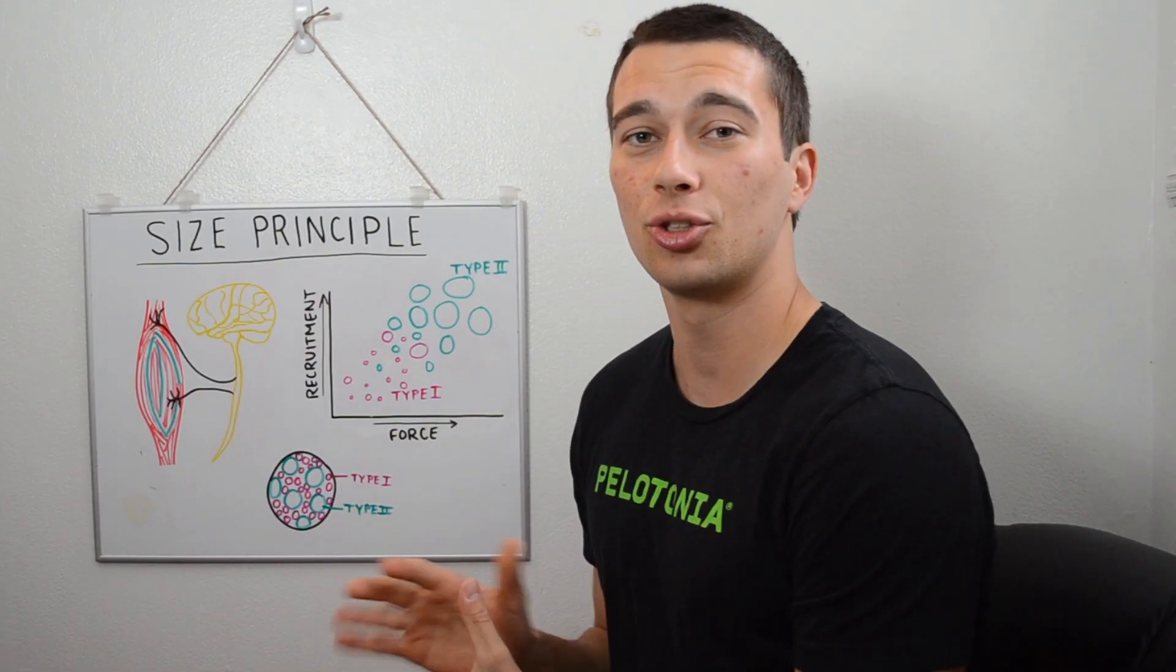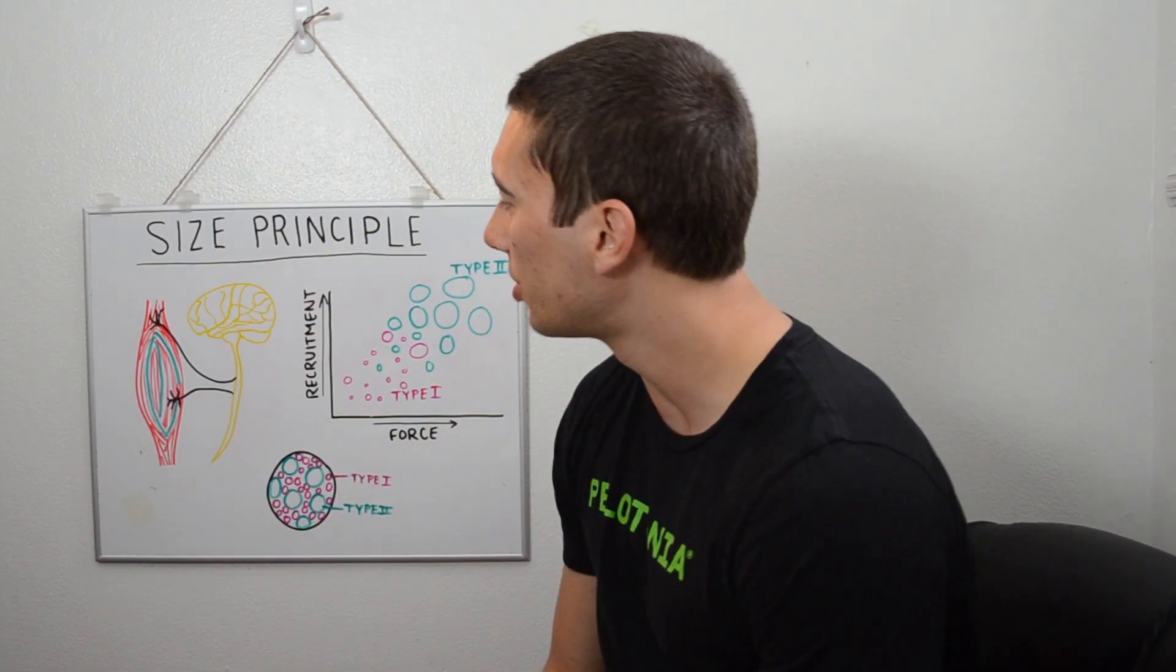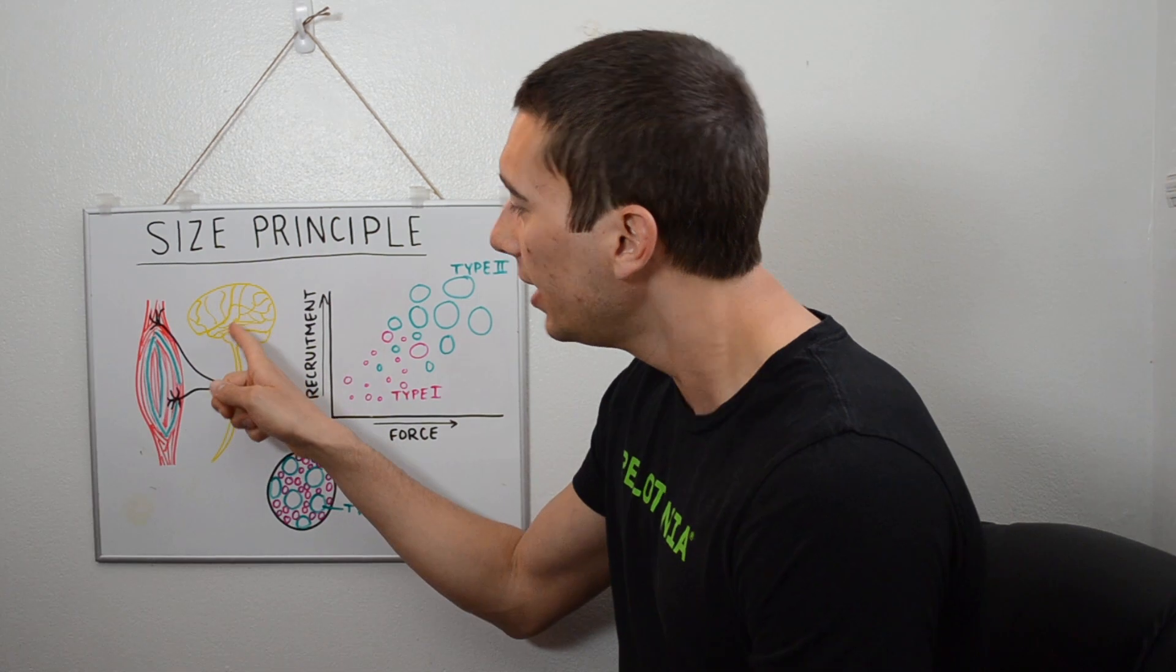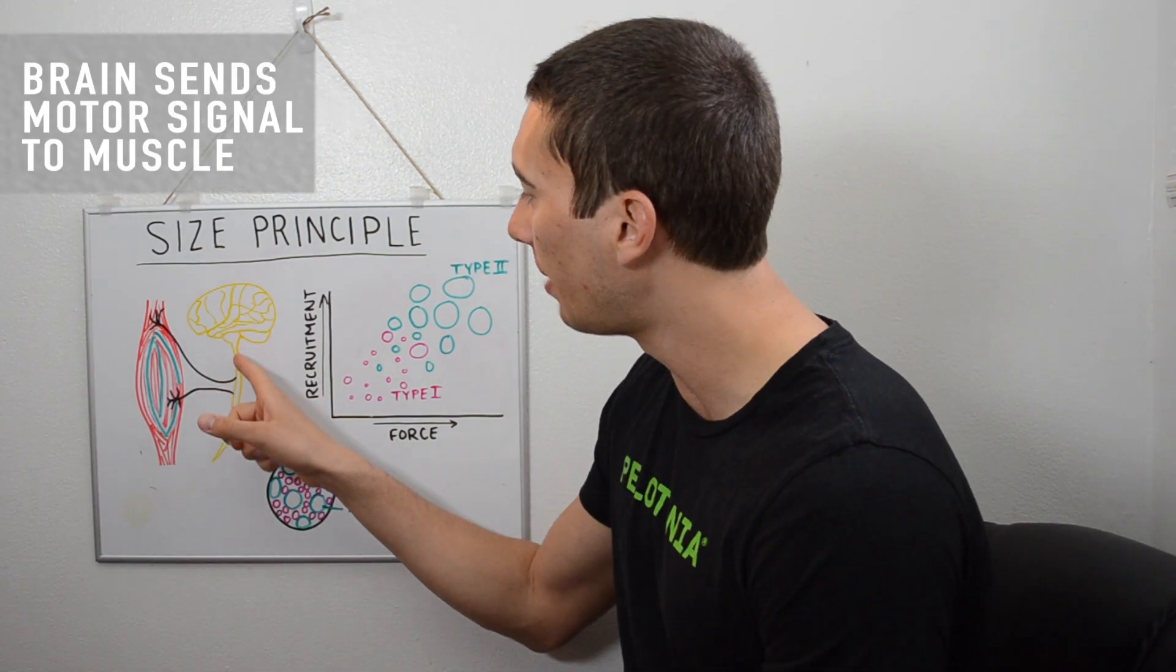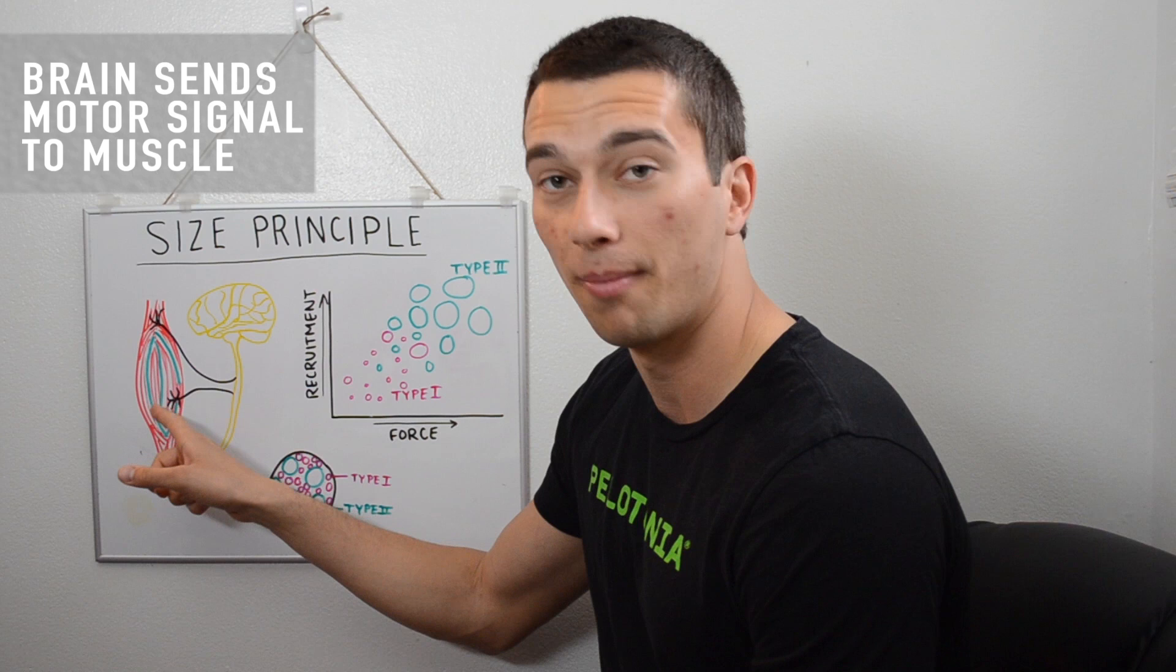Alright, so when we think about a muscle getting activated, this is really what we're talking about. You can see here the brain is going to send a signal through a nerve, usually through the spinal cord and then through a nerve to a muscle.